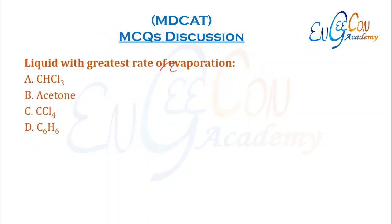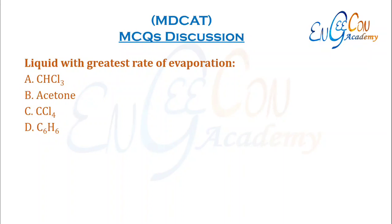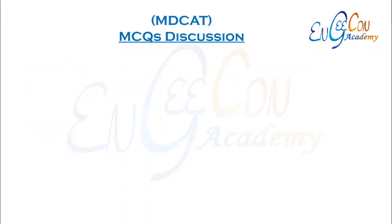Liquid with the greatest rate of evaporation: CHCl3 has a boiling point of 61°C, acetone is 56°C, CCl4 is 78°C, and C6H6 is 80°C. Acetone has the lowest boiling point and therefore the greatest rate of evaporation.